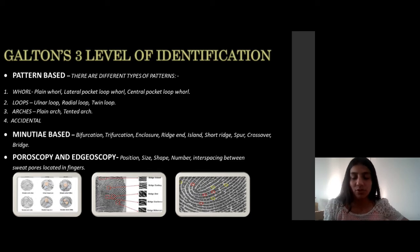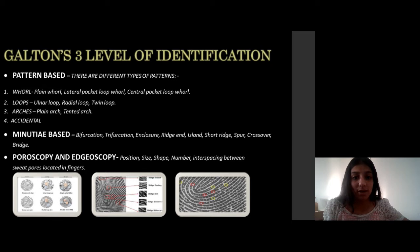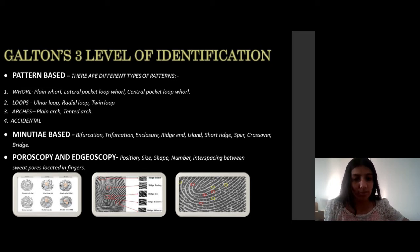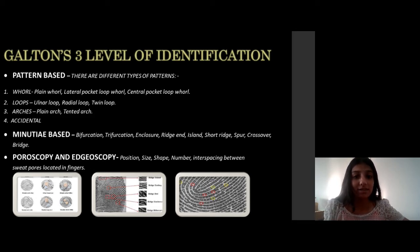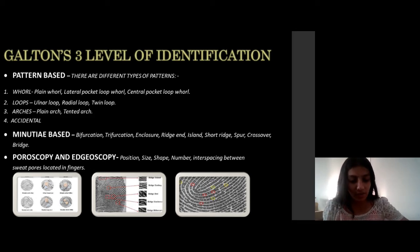The third level involves pores and edoscopy. There are sweat pores, and we consider their position, size, shape, number, and how many gaps are there. This is how many points are located on a person's fingers as a basis for identification, which is called edoscopy and poroscopy.